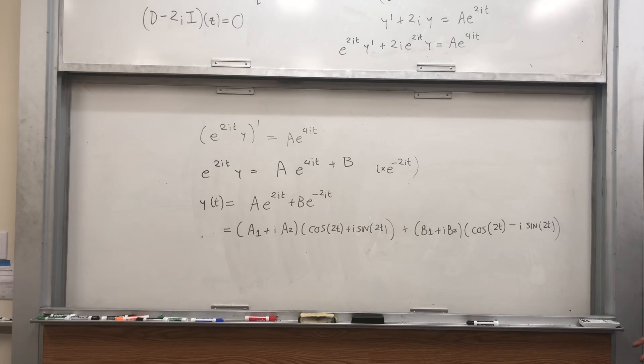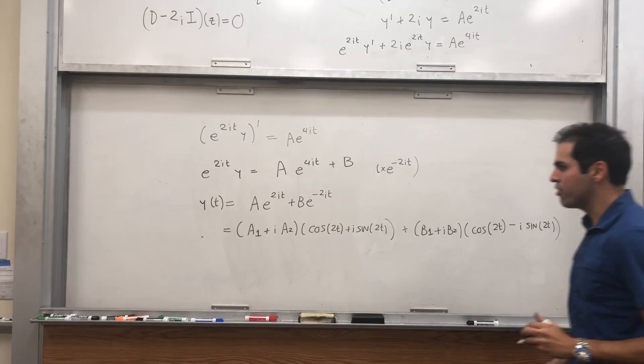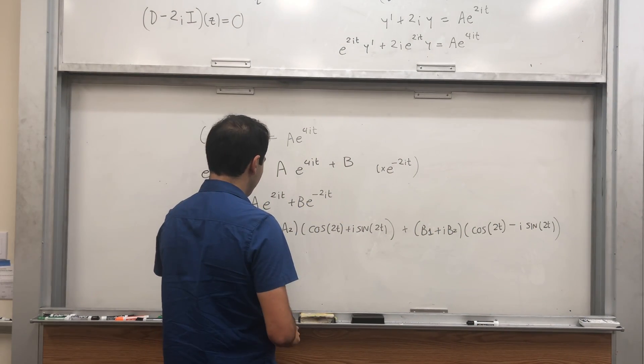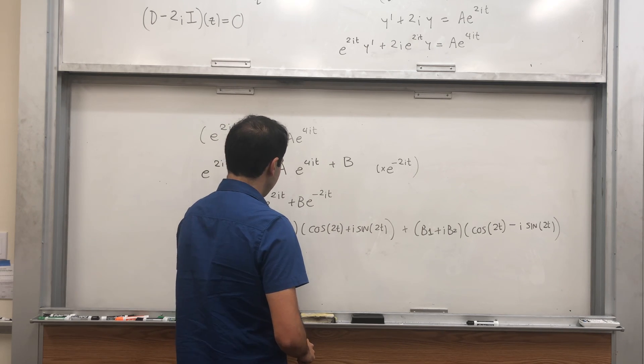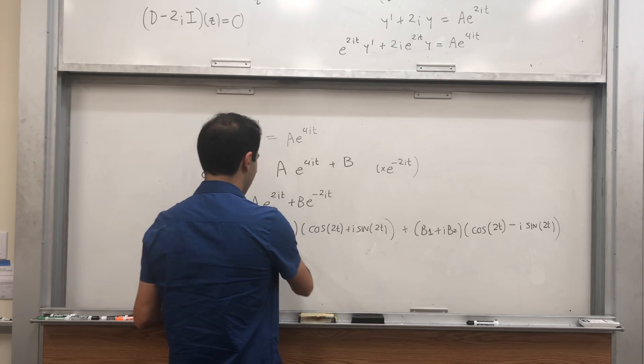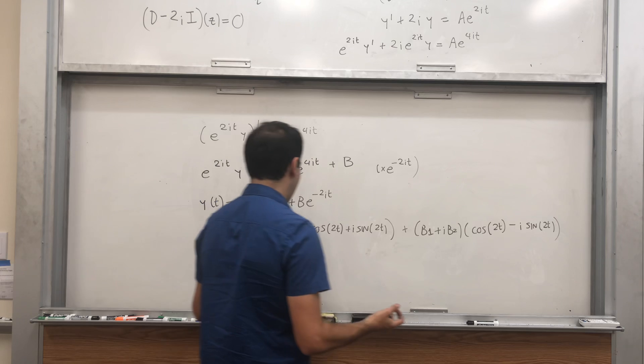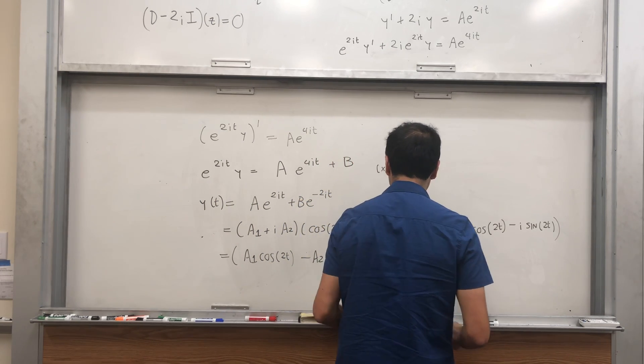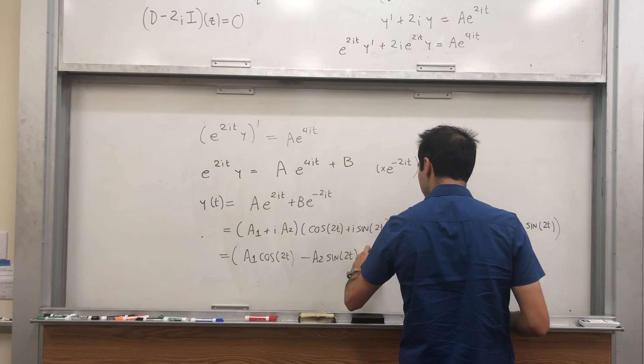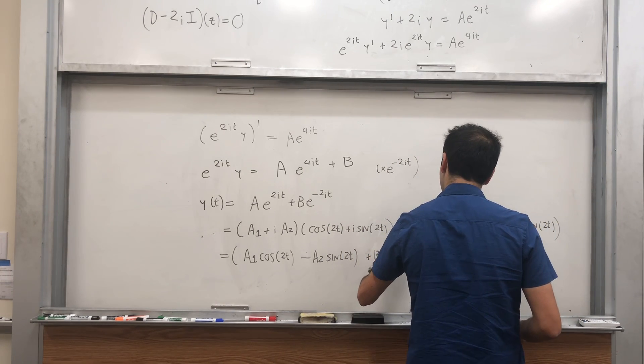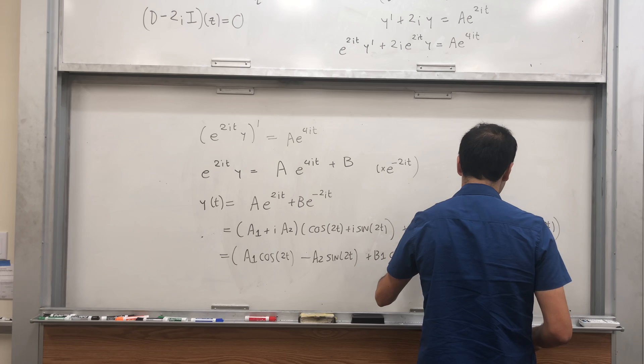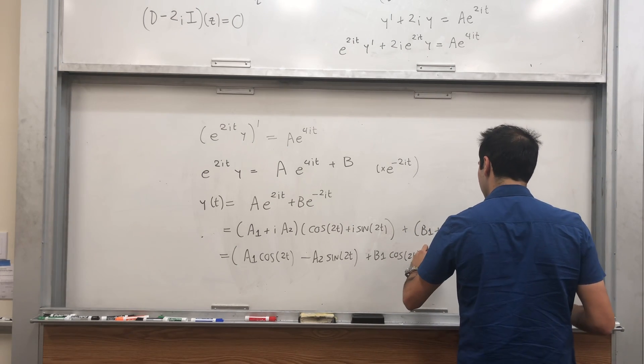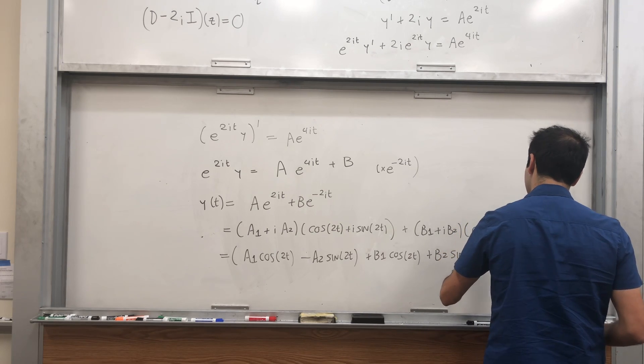And then, let's expand everything out and gather real and imaginary parts. So if you do that, you get a1 cosine of 2t, and then i times i, which is minus, so minus a2 sine of 2t, and then let's continue, plus b1 cosine of 2t, and then i times i, which is minus 1, so plus b2 sine of 2t.